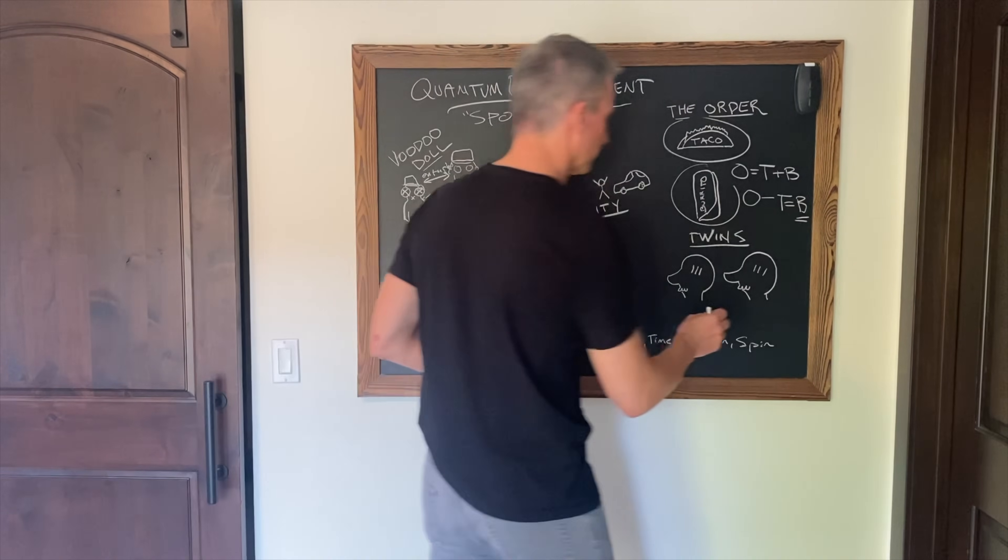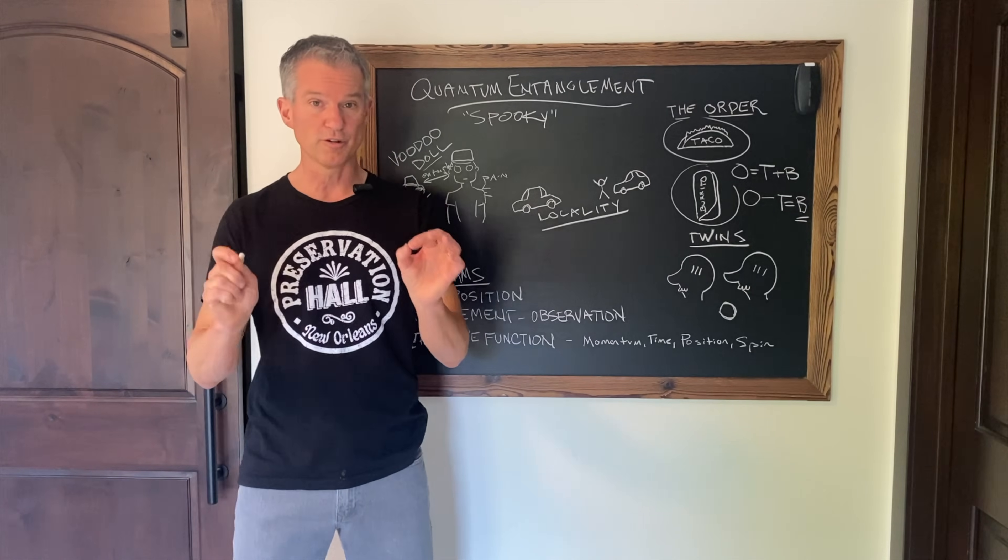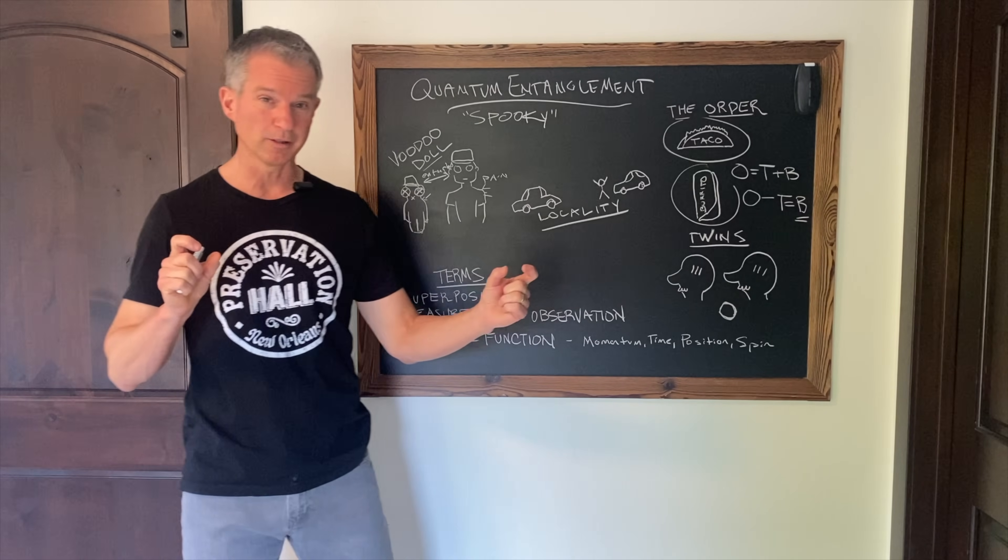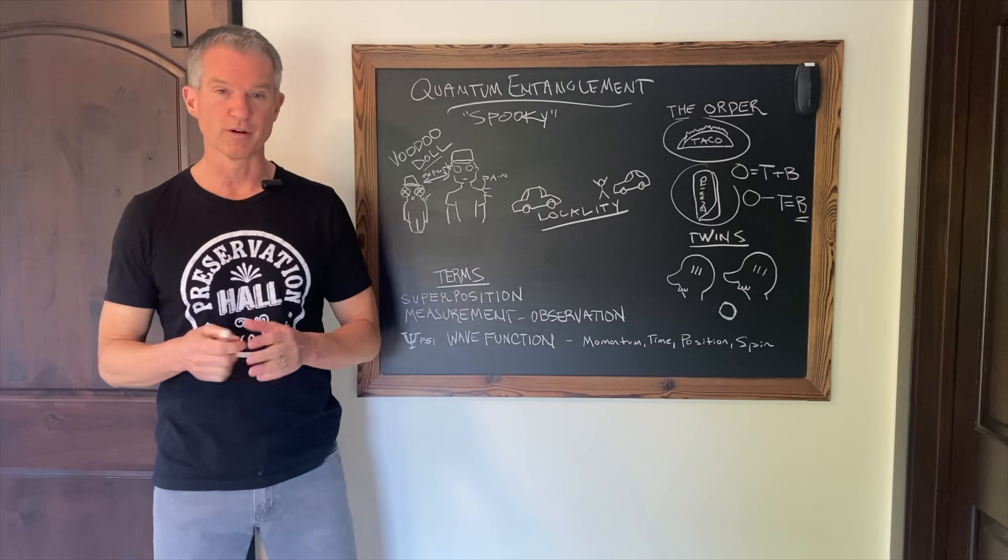That whole idea is analogous in some ways to our understanding of entanglement. Because those twins came from a single particle, a single fertilized egg, which then split into two particles. So the one became two. Those two particles were entangled. And in theory, they can be entangled throughout the lives of those twins.